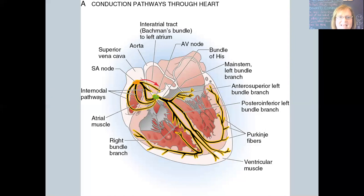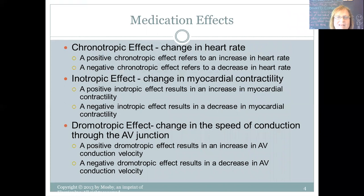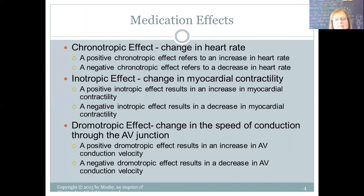Finally, a reminder about medication effects. A chronotropic effect is a change in heart rate — positive chronotropic increases heart rate, negative chronotropic slows it down. An inotropic effect is a change in contractility — the force of contraction. A positive inotropic effect increases myocardial contractility; a negative inotropic effect decreases it. A major category of drugs called inotropes increase cardiac muscle contraction and are used in patients with very low blood pressure representing low cardiac output, to increase that cardiac output.